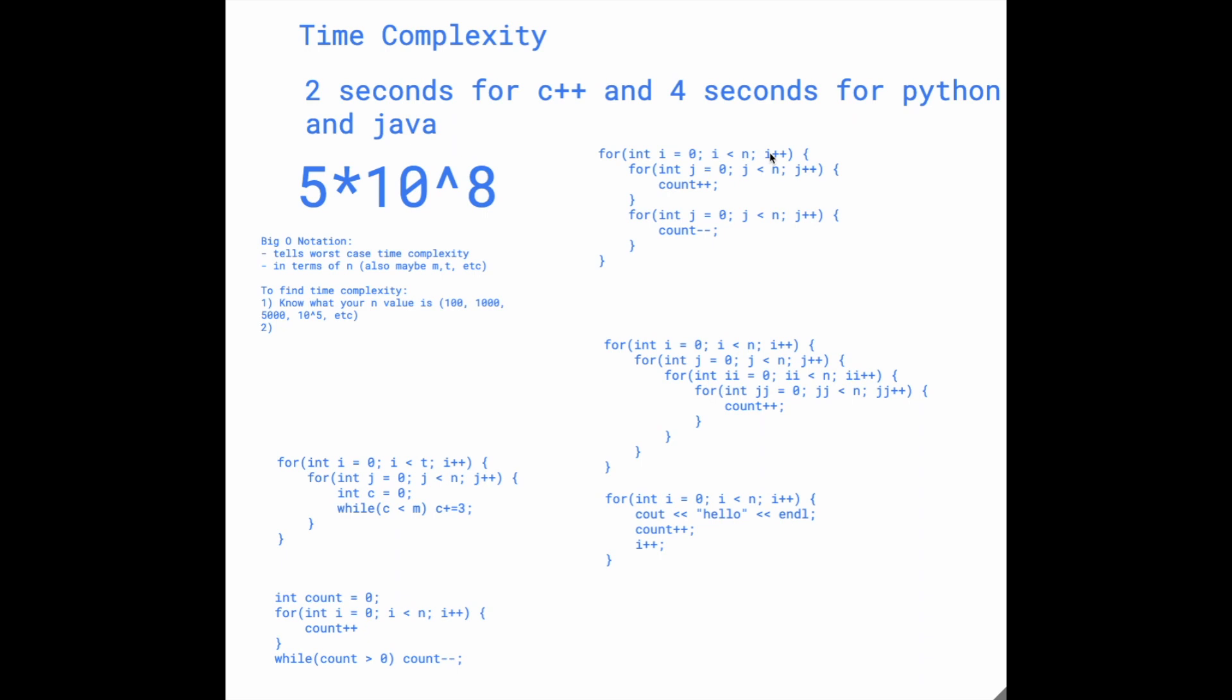A couple of reminders: the big O notation you want to keep in terms of the variables and it's a worst case scenario. If we look at it, we have a for loop that runs n times, so we have already O of n. Then we have two for loops inside. The first for loop runs n times and the second for loop also runs n times.